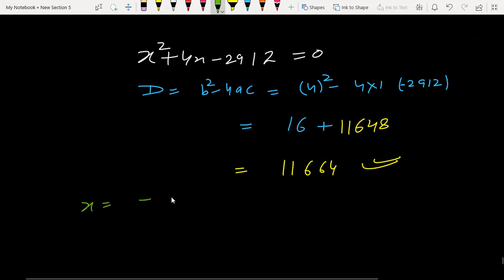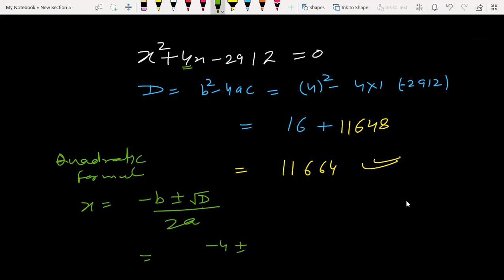Quadratic formula: minus b plus minus under root d upon 2a. Minus b minus 4 plus minus square root of d.